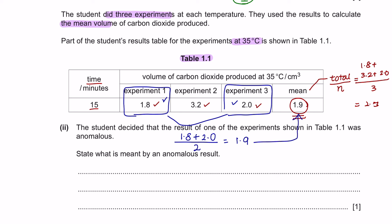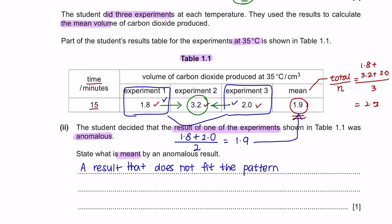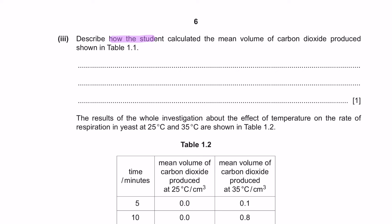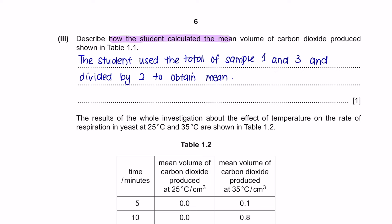Part 2: State what is meant by an anomalous result. The anomalous result here is 3.2 because it is very far different from 1.8 and 2.0. An anomalous result is a result that does not fit the pattern. When calculating the mean, we do not include the anomalous result. Part 3: Describe how the student calculated the mean — they used the total of samples 1 and 3 and divided by 2 to obtain the mean of 1.9.